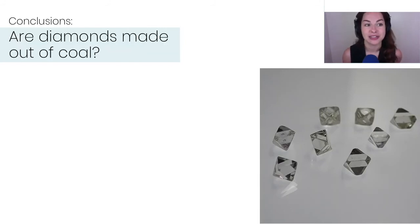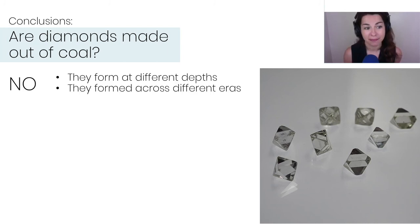So in conclusion are diamonds made out of coal? The answer is no. They form at different depths. They formed across different eras. It's not possible for one to come from the other. Apart from that one question mark that I have over meteorite diamonds.